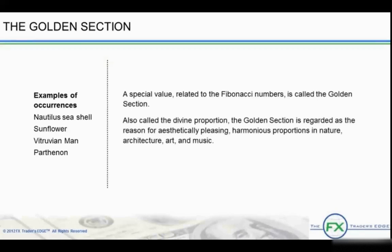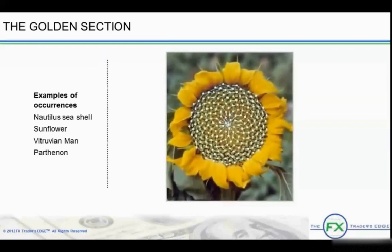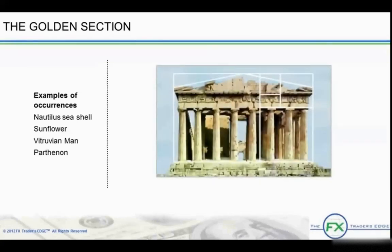A special value related to the Fibonacci numbers is called the golden section, also called the divine proportion. The golden section is regarded as the reason for aesthetically pleasing, harmonious proportions in nature, architecture, art, and music. In the nautilus seashell, each section subdivides in area to one of the percentages of the golden ratio. In a sunflower, seeds grow in a pattern in distance of the golden ratio. Perhaps the most well-known example is the Vitruvian Man by Leonardo da Vinci, sometimes called the canon of proportions, which illustrates how the human body is subdivided into proportionate percentages. In architecture, the most stable and most eye-pleasing structures incorporate golden ratio percentages.